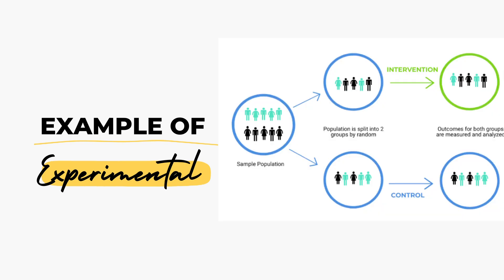Another example is determining the effectiveness of a certain treatment. One group is given the medicine or treatment, while the other group is given the placebo effect or none at all.